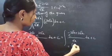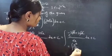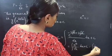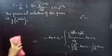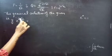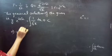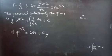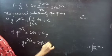Since e^0 = 1, this becomes ∫ 1/√x dx + C. Now we have y · e^(2√x) = ∫ 1/√x dx + C. Since ∫ 1/√x dx = 2√x, we get y · e^(2√x) = 2√x + C. Therefore, y · e^(2√x) = 2√x + C is the required general solution.